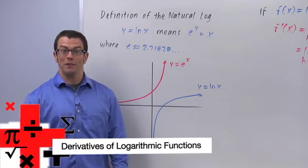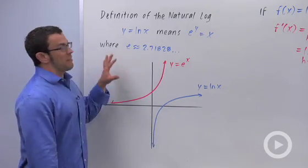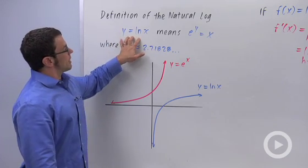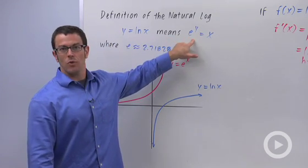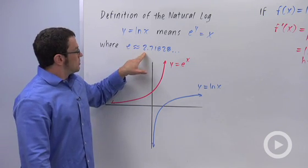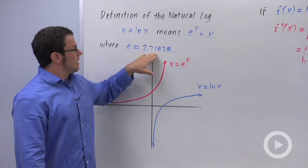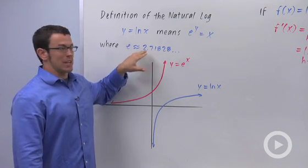We're talking about derivatives of functions, and one special function is the natural log function. Now recall the definition of natural log. y equals ln x means e to the y equals x. And remember that e is that special number 2.71828. It's an irrational number and it has an infinite non-repeating decimal representation just like pi.